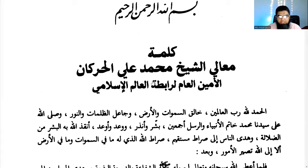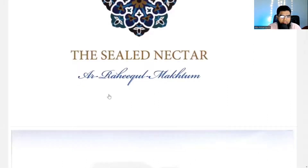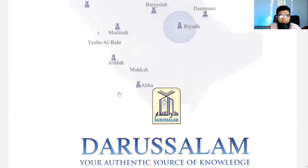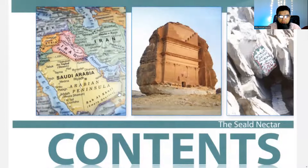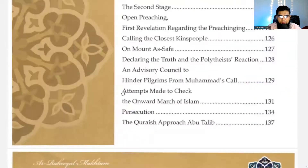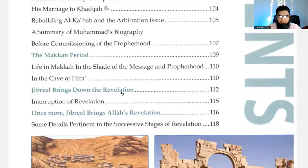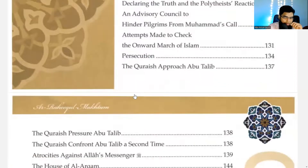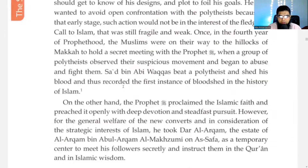Let's go to the foreword and we'll read it from the English version because the preface in Arabic always has very hard words. 'Kalimatun 'ala al-Sheikh Muhammad 'Ali al-Harakan' — I think this is the Ameen al-'Am of the Rabitat al-'Alam al-Islami. There was a competition held — we'll read it from the English — by the Muslim World League in 1976 or so. The contents are here, very beautifully laid out with pictures — a very nice book, alhamdulillah.